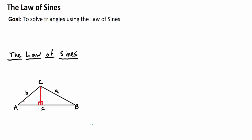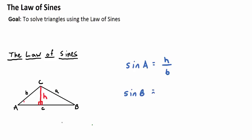If we call the length of this altitude H for height, can you tell me what sine of angle A is? Looking at the left-hand right triangle, it would be H over the hypotenuse, which is B. The side from A to C is what we're calling b. Now focus on the right-hand right triangle and tell me what sine of angle B is. Using the SO part of SOHCAHTOA, it's H — the opposite — over the hypotenuse, which is a.